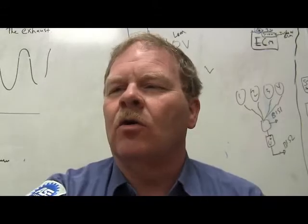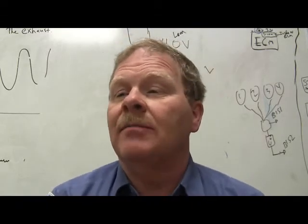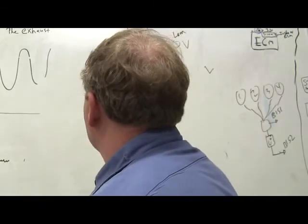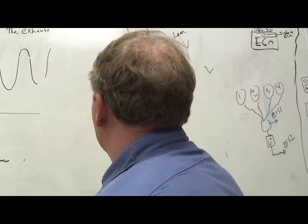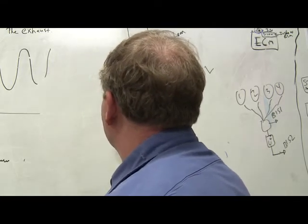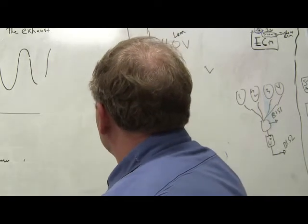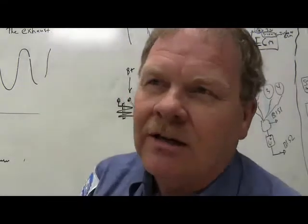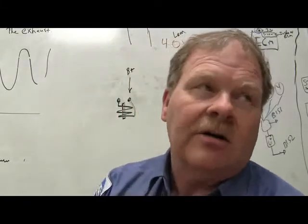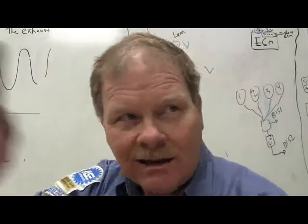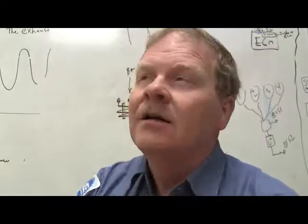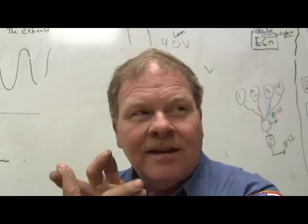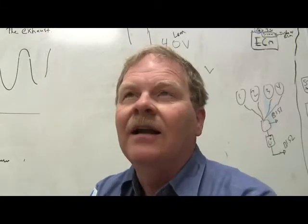The transmission control module or powertrain control module typically turns on a solenoid by doing what? There are a couple of ways. On Ford cars, you're going to have B+ coming from your EEC relay — it powers up everything with the EEC power relay except the ignition coil. Whenever the computer decides to operate any of those solenoids — fuel injectors, transmission solenoids, EGR solenoids — it's going to ground those.